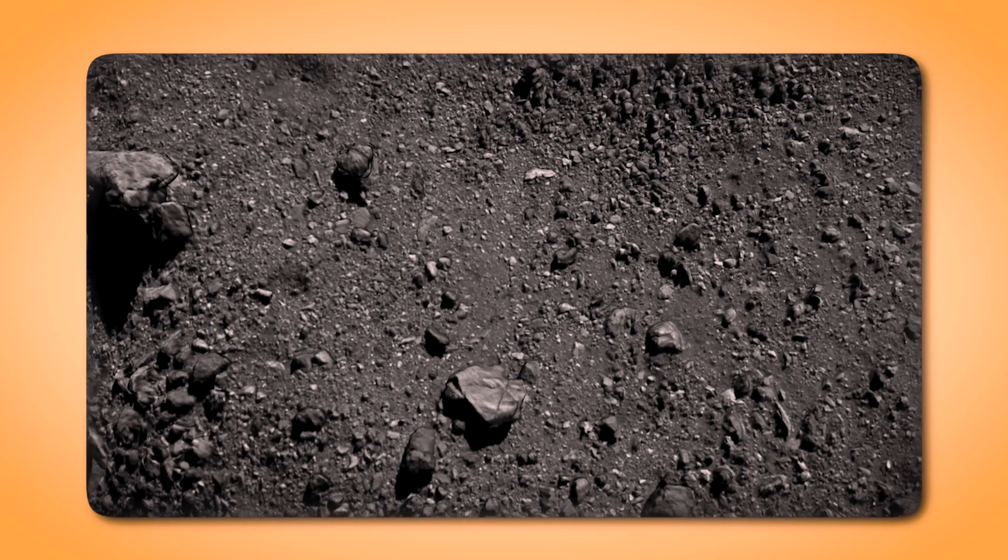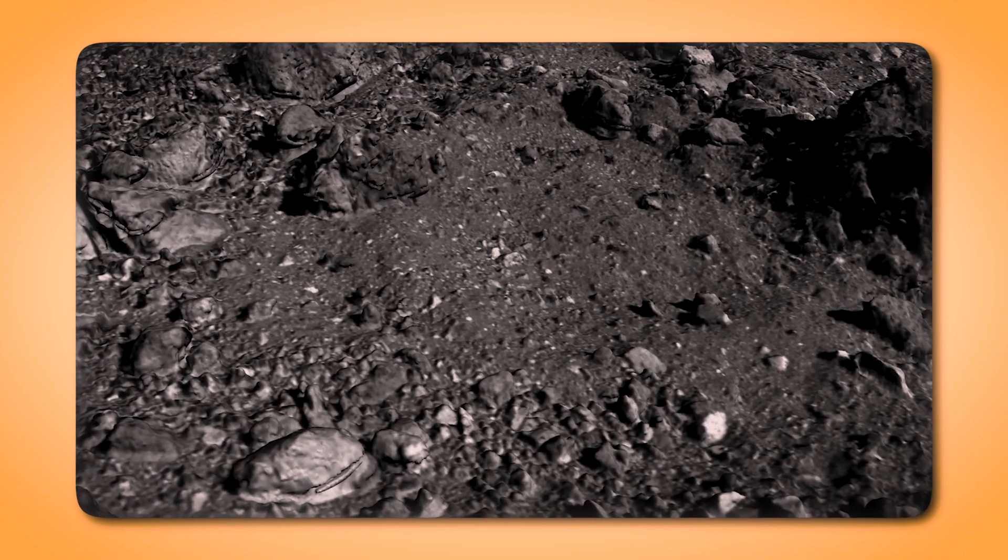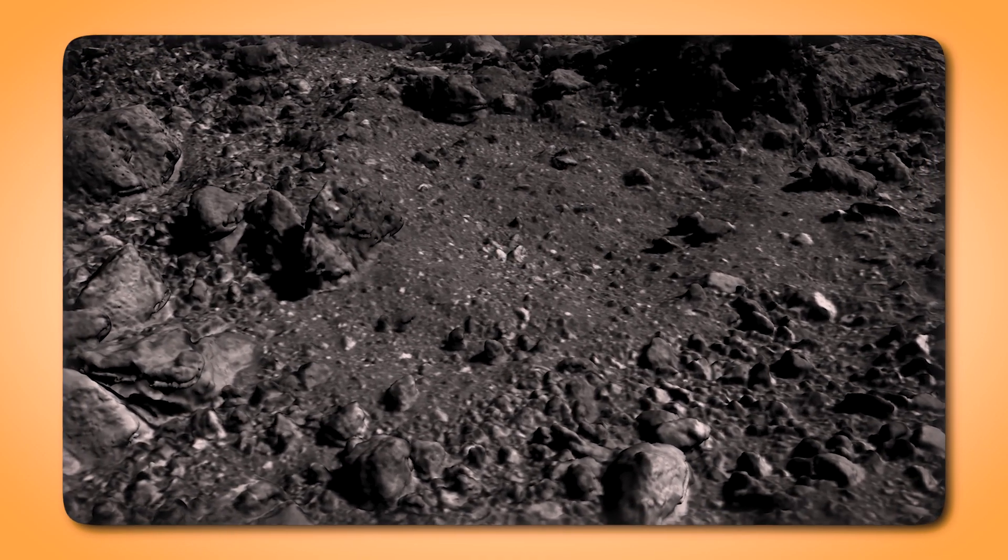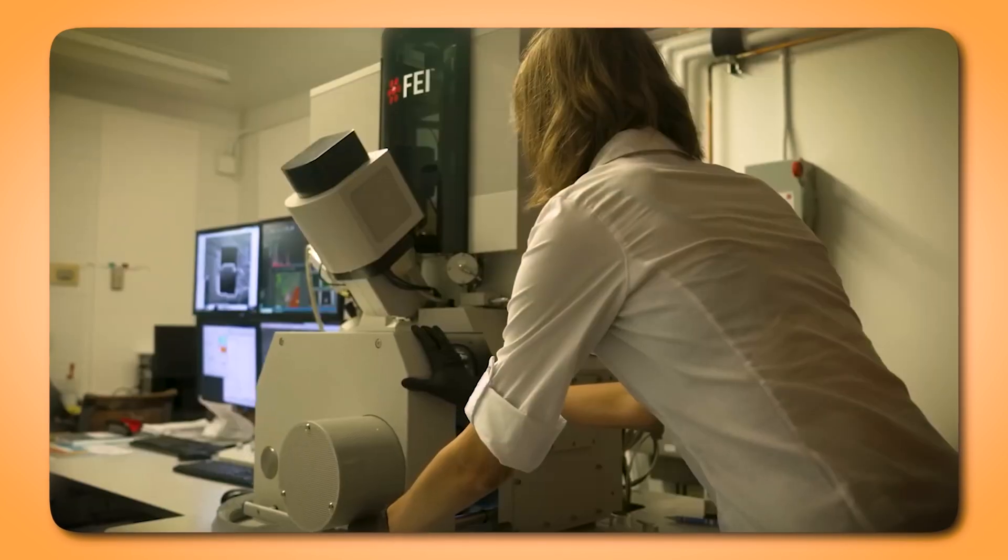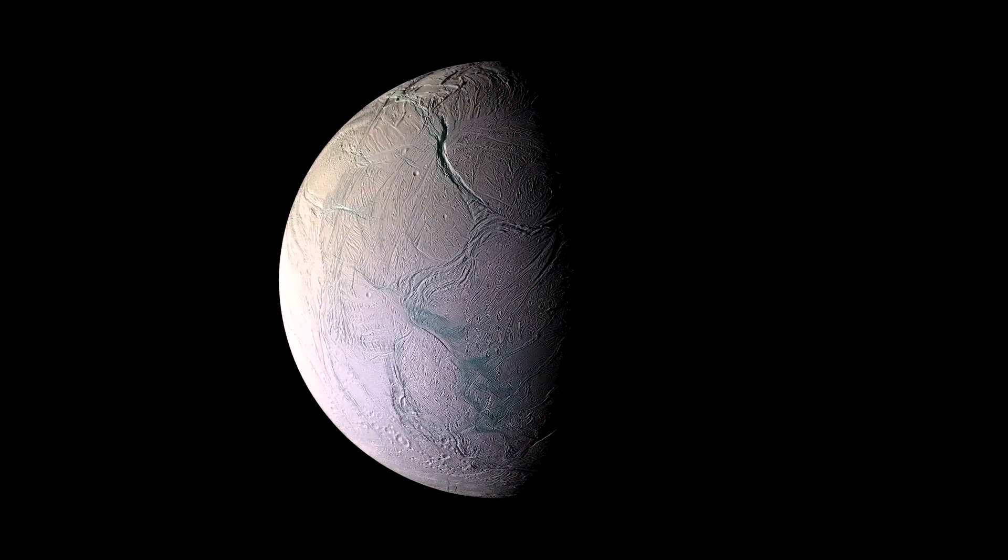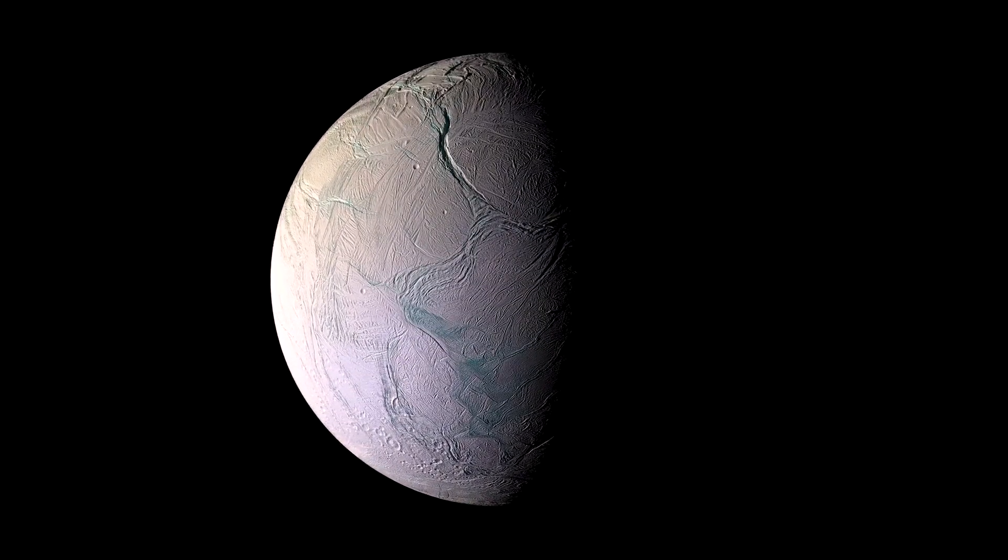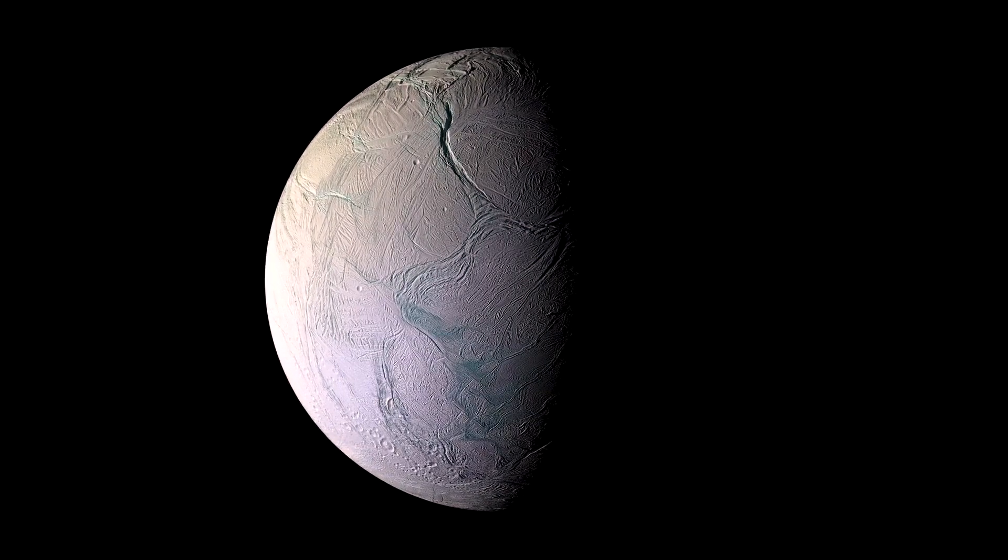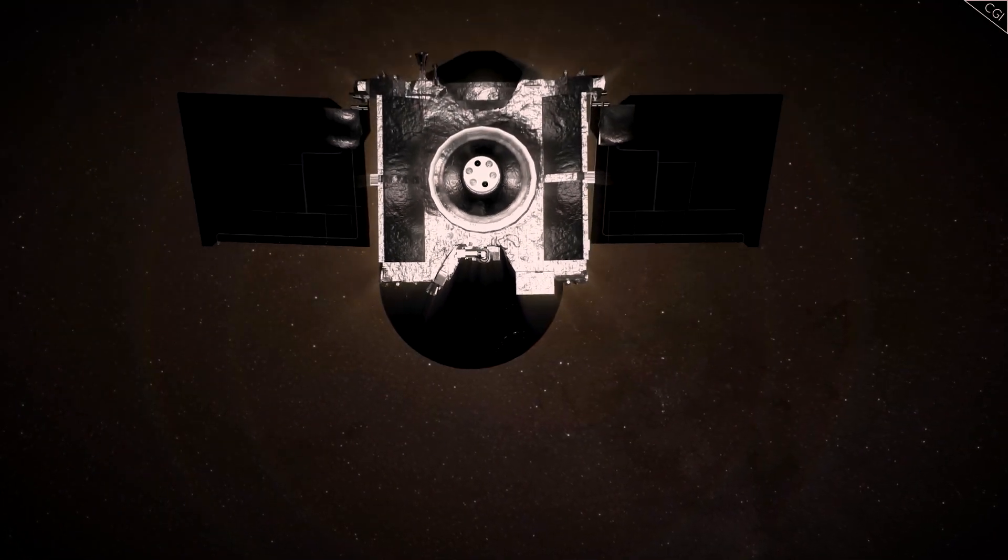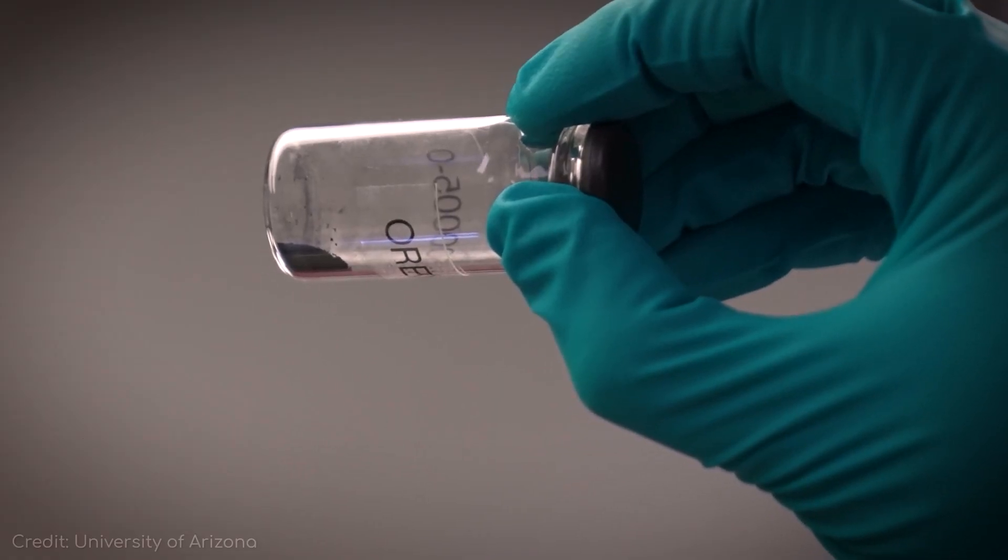While there isn't yet enough evidence to confirm that Bennu originated from an ancient water world, Harold Connolly, a geologist at Rowan University and OSIRIS-REx mission sample scientist, noted that the traces of prolonged warm water activity in the samples point to a parent body at least 10 kilometers wide, possibly larger. Ongoing research will delve deeper into these clues, but it's awe-inspiring to imagine that Bennu could have come from a protoplanet or large asteroid that shared key characteristics with early Earth or icy, ocean-bearing moons like Europa and Enceladus.